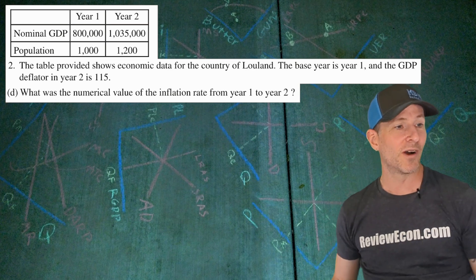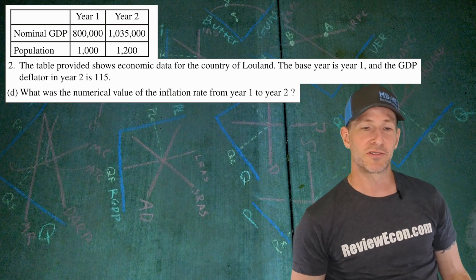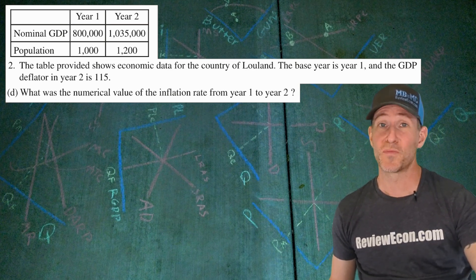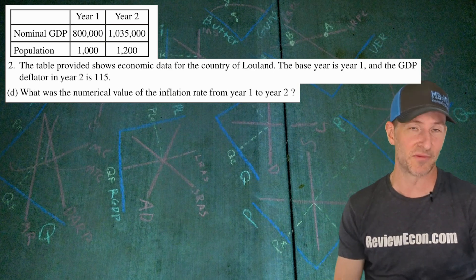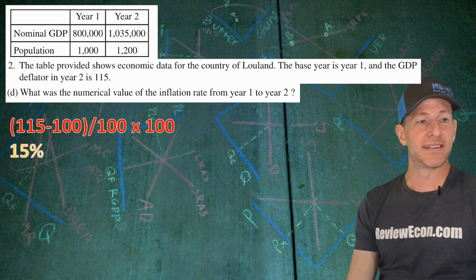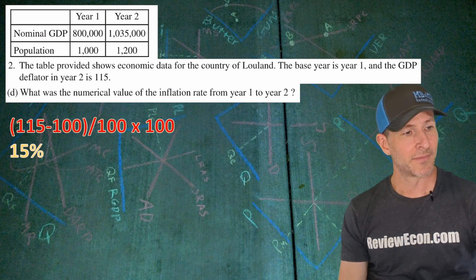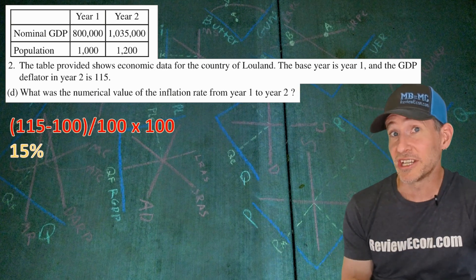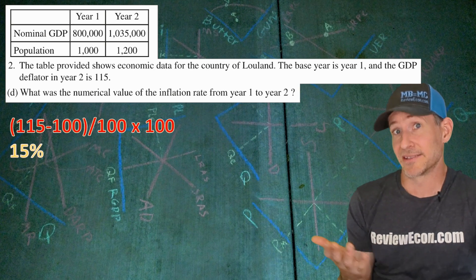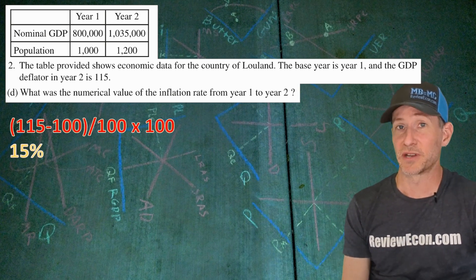On to part D. What was the numerical value of the inflation rate from year one to year two? Remember, calculating inflation is new minus old divided by old times 100 when looking at two CPIs or two GDP deflators. The old GDP deflator would have been 100, because that is the base year's index number for both CPI and GDP deflators — always 100. Doing that math, the inflation rate is 15%.